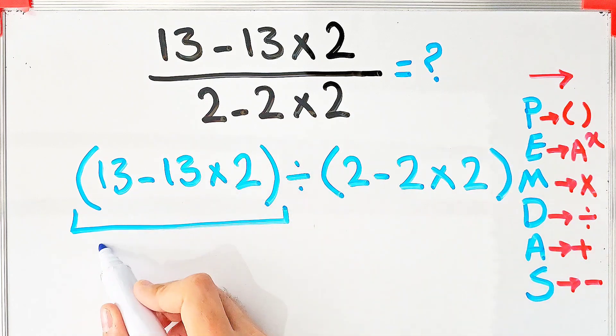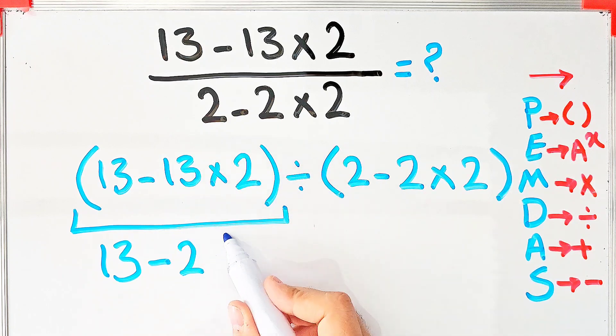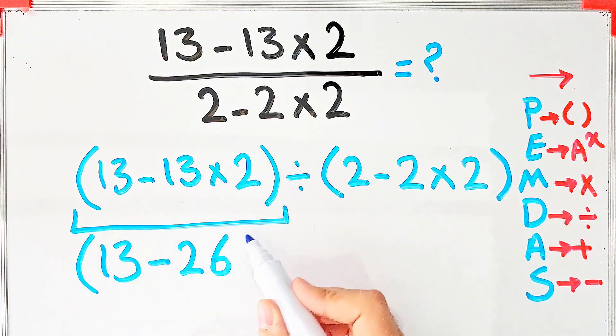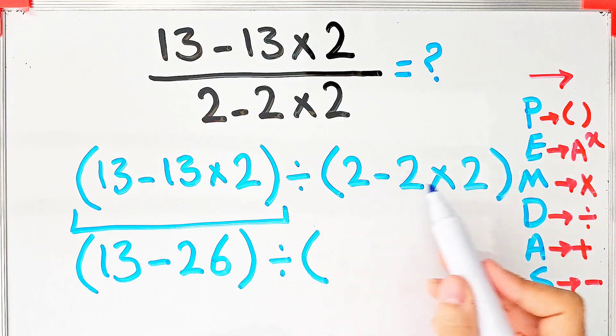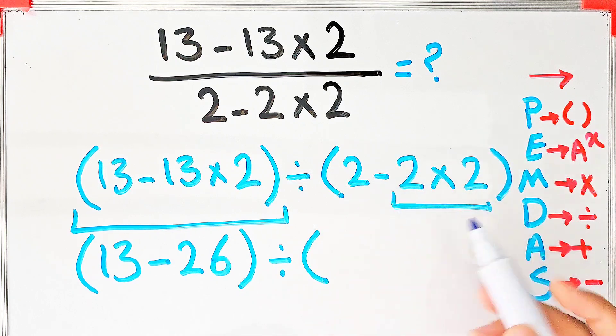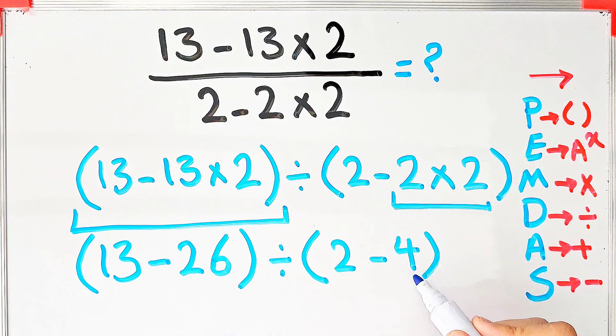We have (13 - 26) ÷ (2 - 4). Inside the first parentheses we have 13 - 26, and inside the second parentheses we have 2 - 4. Okay guys, let's solve it step by step together again. We simplify the parentheses.